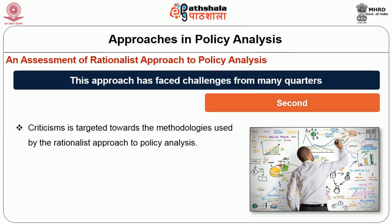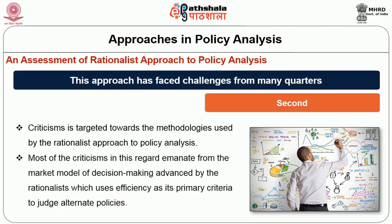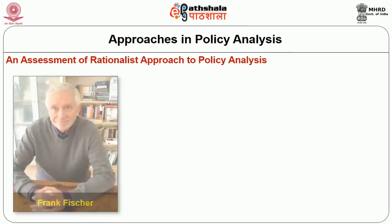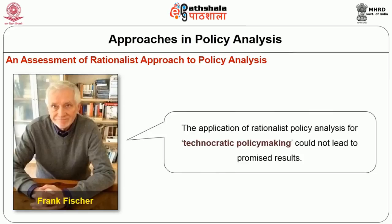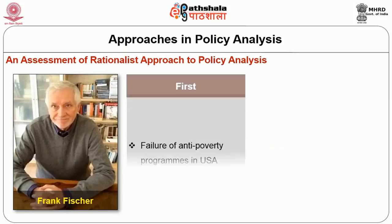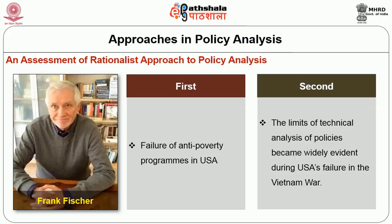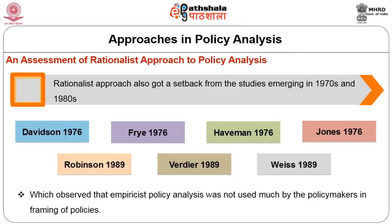The second set of criticisms is targeted towards the methodologies used by rationalist approach to policy analysis. Most of the criticisms in this regard emanate from the market model of decision making advanced by rationalists, which uses efficiency as its primary criteria to judge alternate policies. Apart from these criticisms, an assessment of initial applications of rationalist policy analysis by many scholars revealed that it could not achieve what it promised in terms of optimal results. Frank Fisher discusses two such cases in detail where the application of rationalist policy analysis for technocratic policymaking could not lead to promised results — the failure of anti-poverty programs in the USA, and secondly the limits of technical analysis which became widely evident during the USA's failure in the Vietnam War. Rationalist approach also got a setback from studies emerging in the 1970s and 1980s, which observed that empiricist policy analysis was not used much by policy makers in the framing of policies.